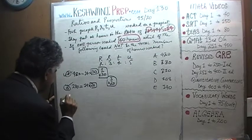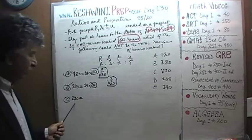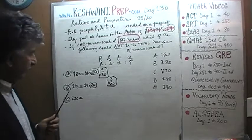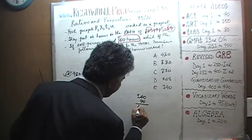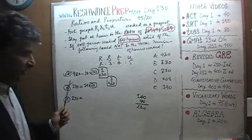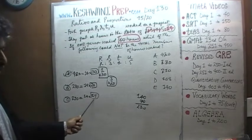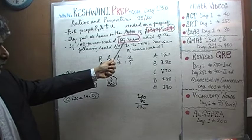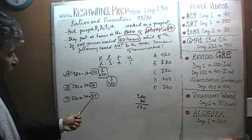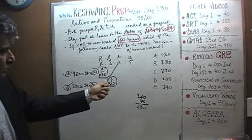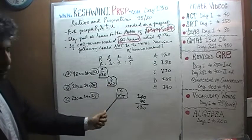Let's look at C — 210. 210 divided by 14 is 15, so each part is worth 15 hours. One person worked 60 hours; 60 divided by 15 is 4. We need somebody who worked 4 parts — that's T. T worked 4 parts at 15 hours each, equaling 60 hours. So 210 is also possible.